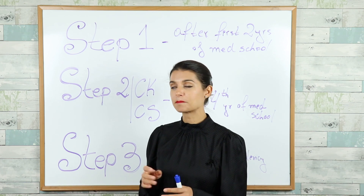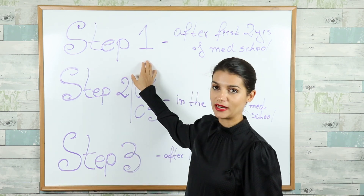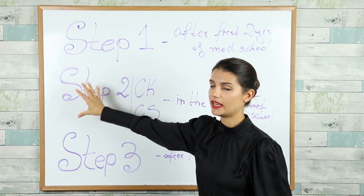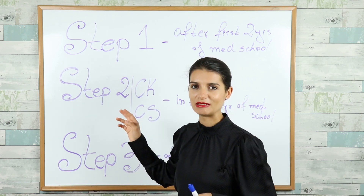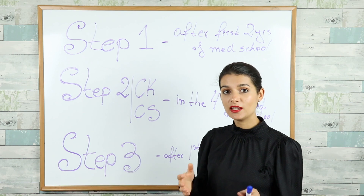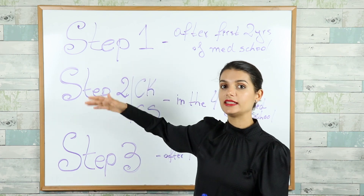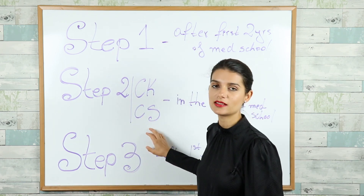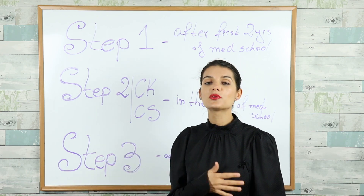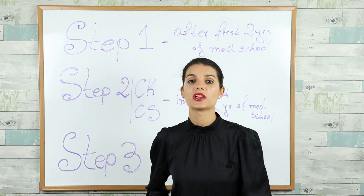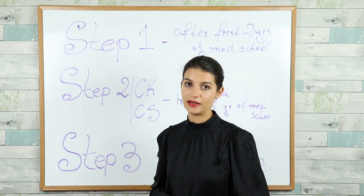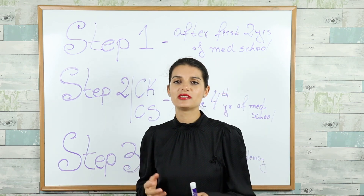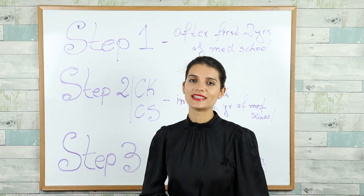The important rule is that you have seven years from the date you pass Step 1 to complete all three — or in reality five — exams. If seven years later you have not taken all of them, all your results will be deleted from the system and you will have to retake everything. But if you complete all of them, you seal your USMLE examination and never have to take any of these tests again.